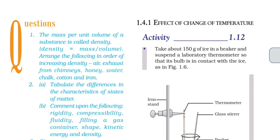First question: the mass per unit volume of a substance is called density. Density means mass per unit volume of a substance, or density is equal to mass divided by volume.